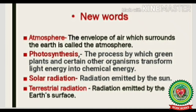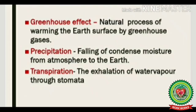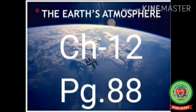Number four: terrestrial radiation — radiation emitted by the earth's surface. Number five: greenhouse effect — the natural process of warming the earth's surface by greenhouse gases. Number six: precipitation — the falling of condensed moisture from the atmosphere to the earth, which may be in the form of rain, snow, hail, sleet, etc. And finally, transpiration — the exhalation of water vapor through stomata.